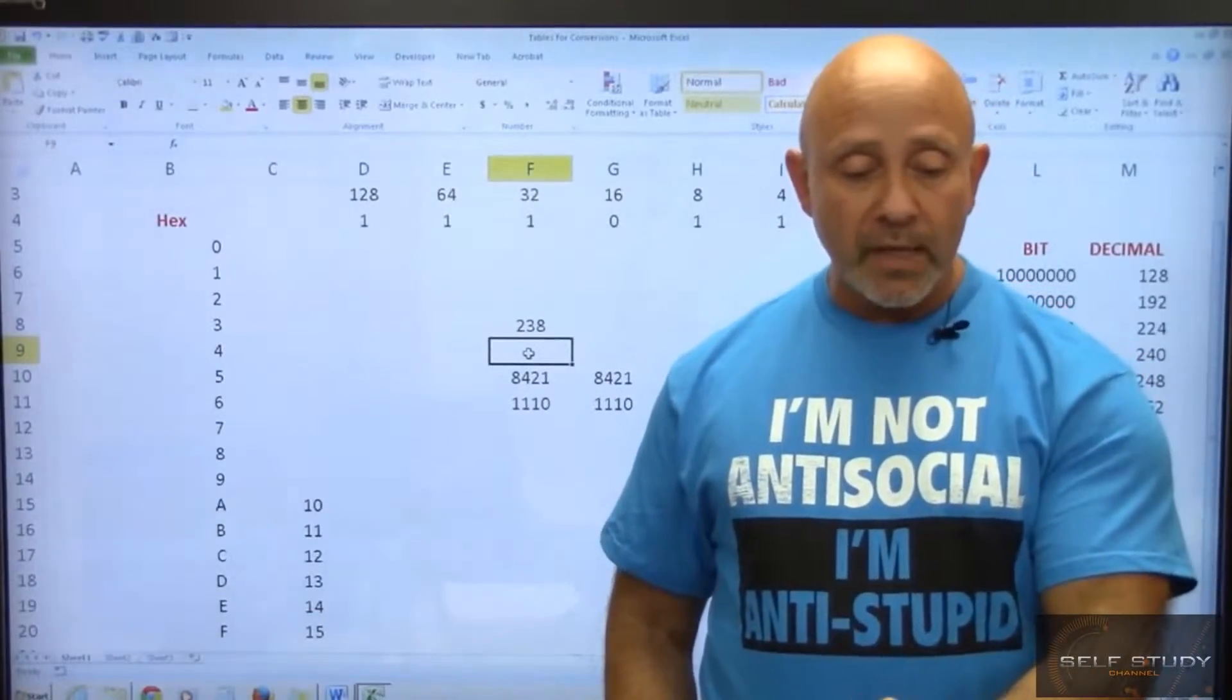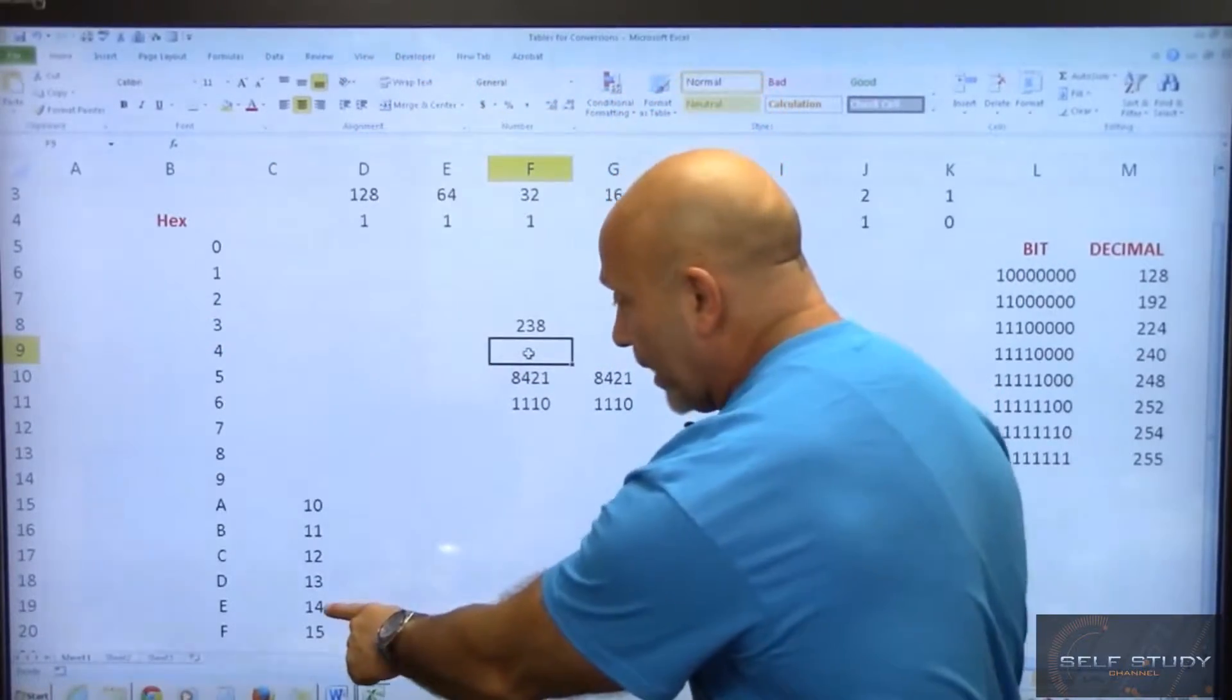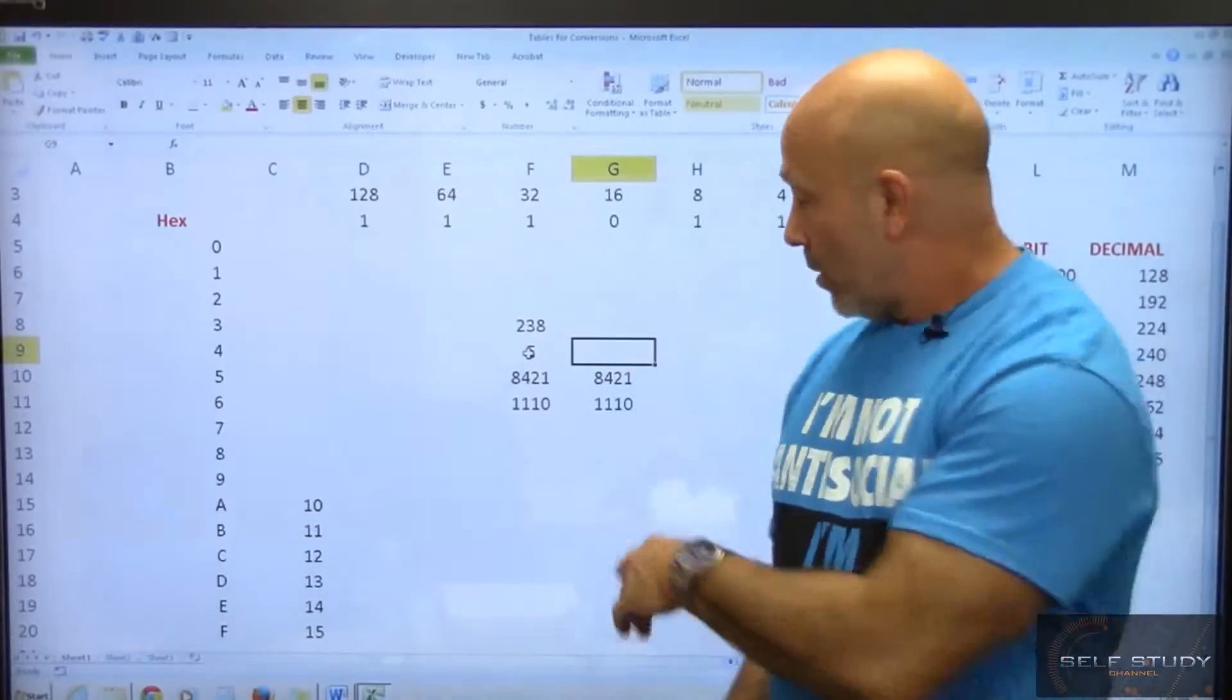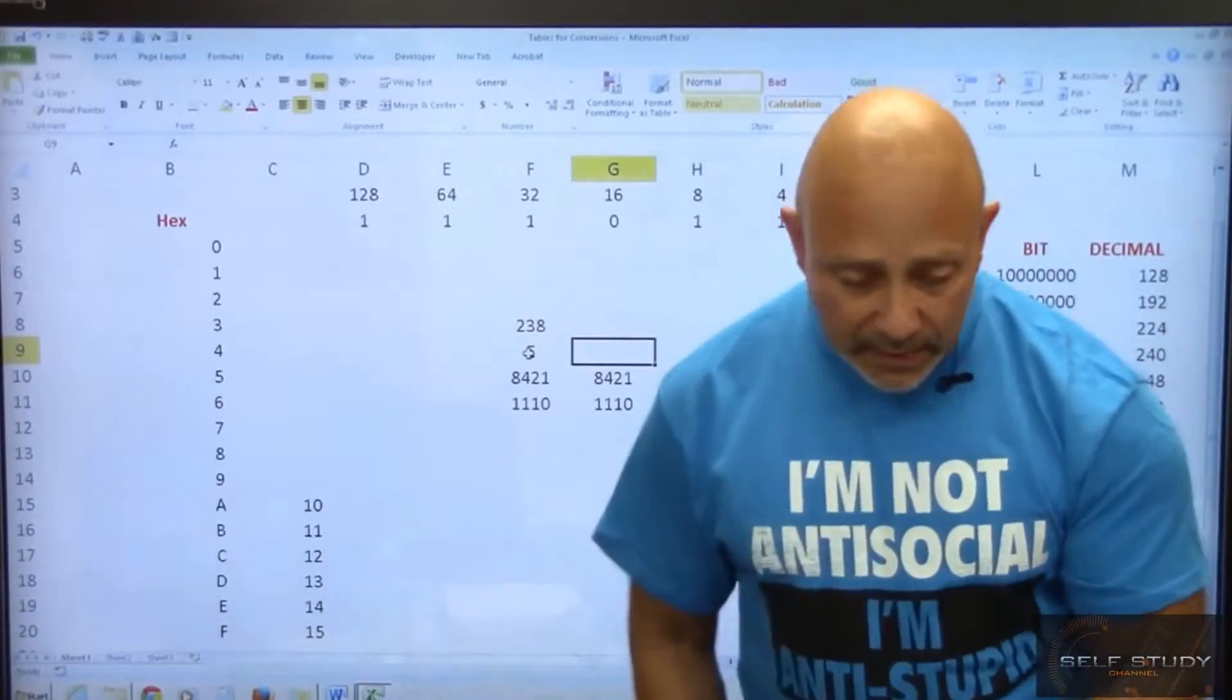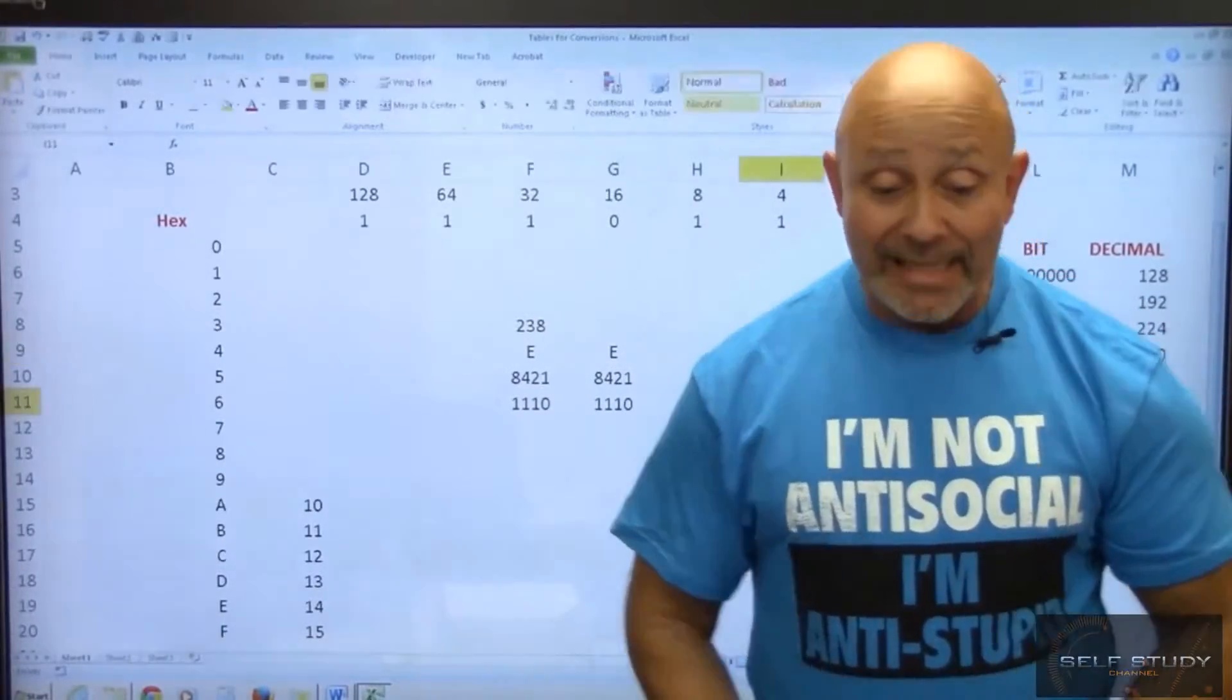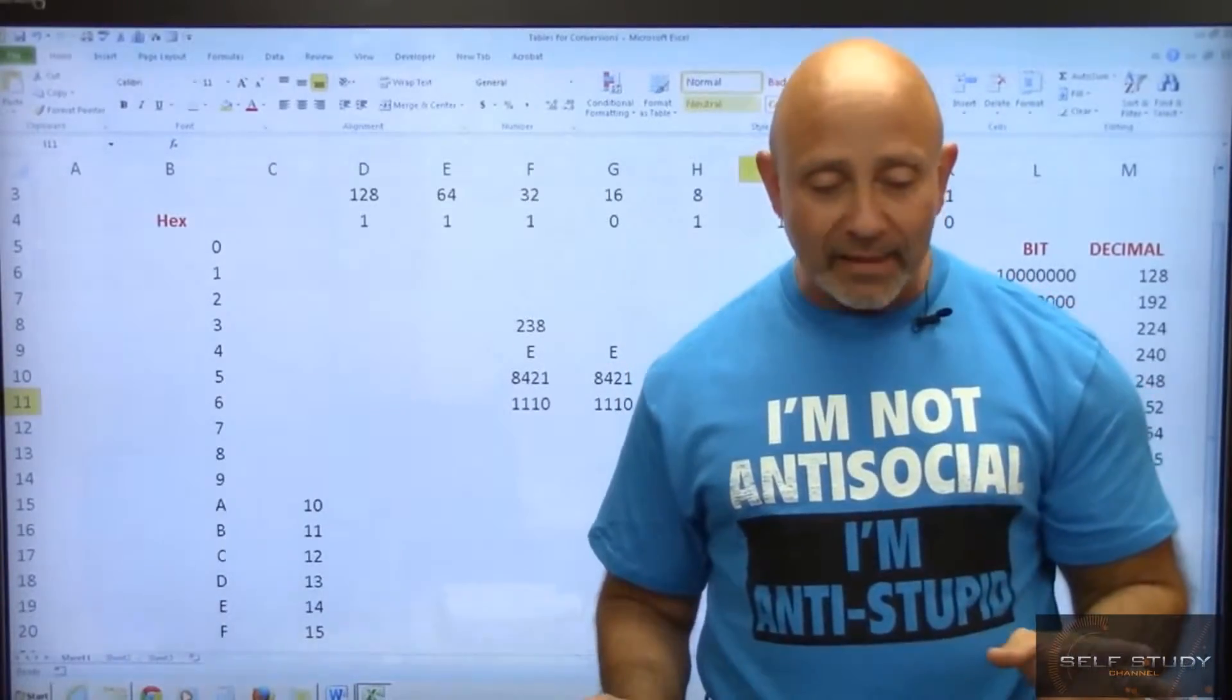So what binary bits are on here? Eight, four, and two. So eight and two is 10, four is 14. What is 14? 14 is E, so this is E. And then one, one, one, zero, same thing, E, it's 14. So our hex number is EE. Very good number there, 238, that was pretty cool, I like that.